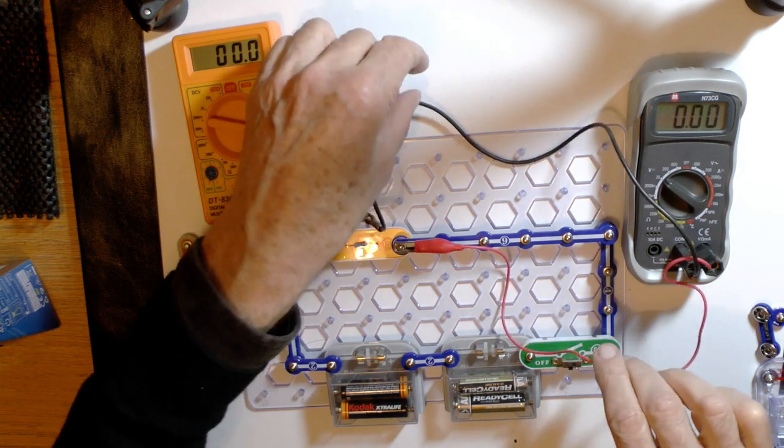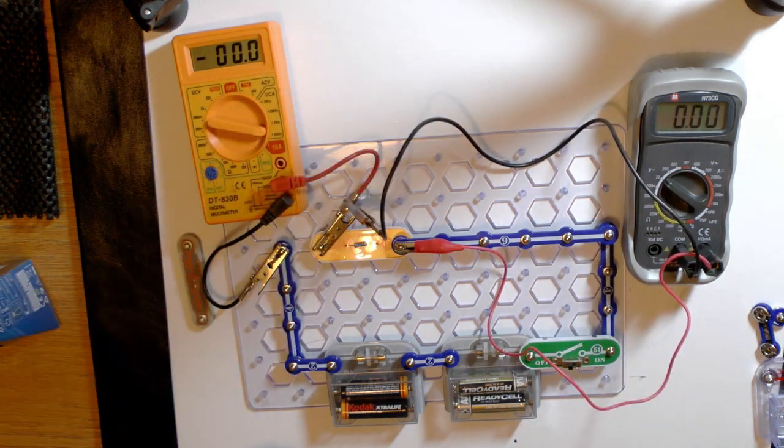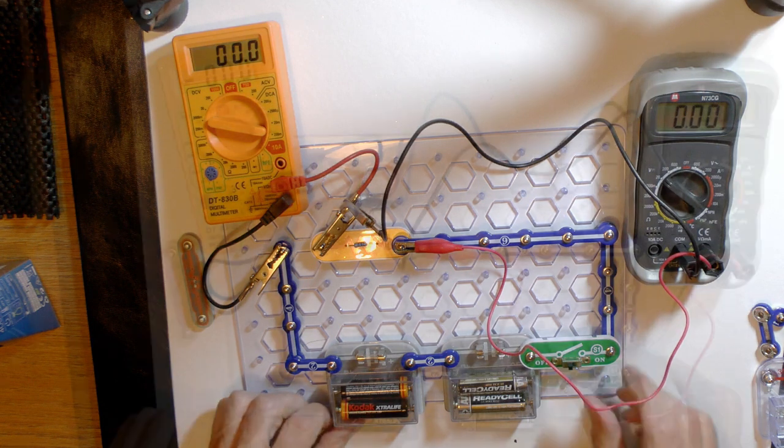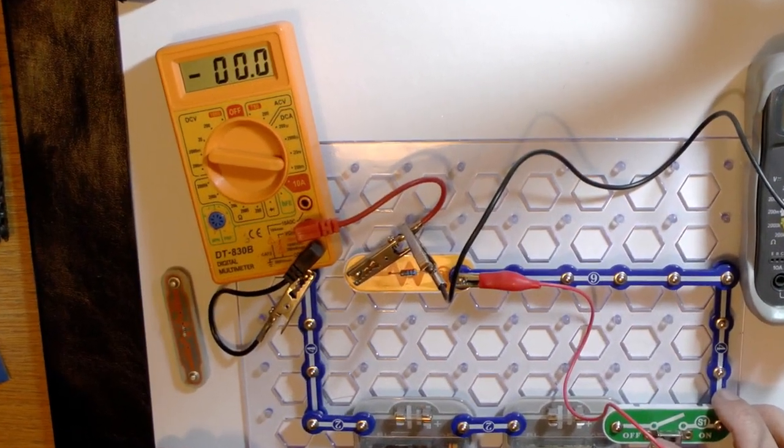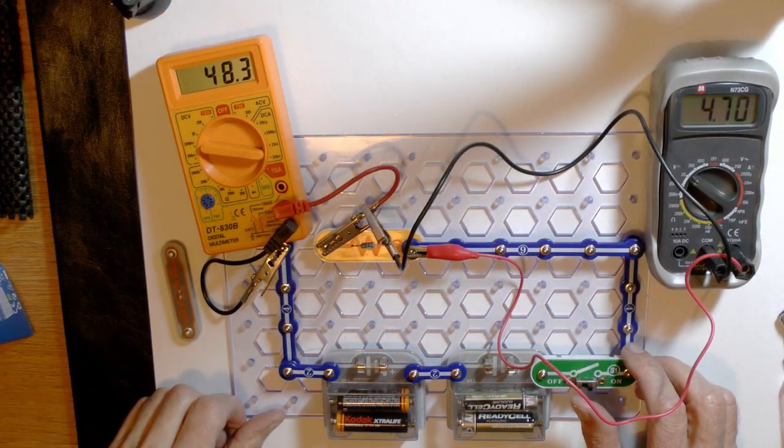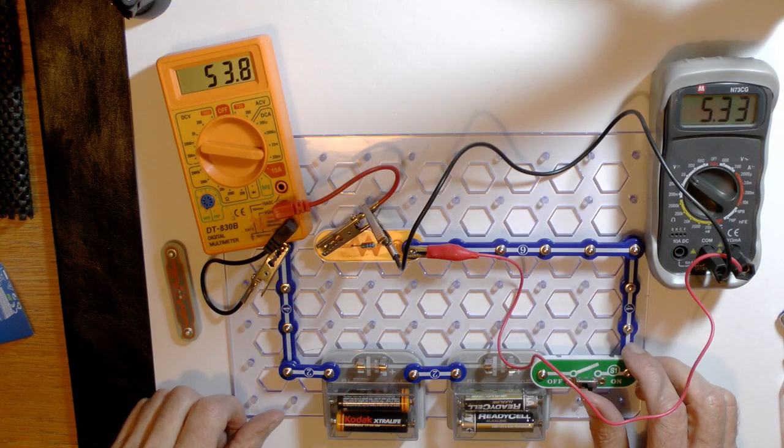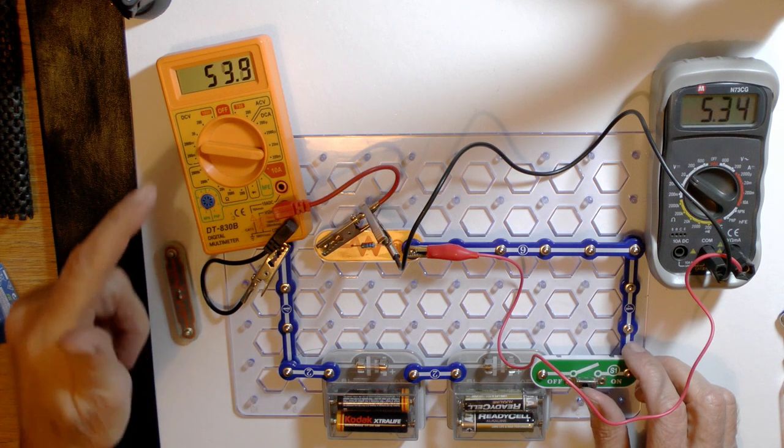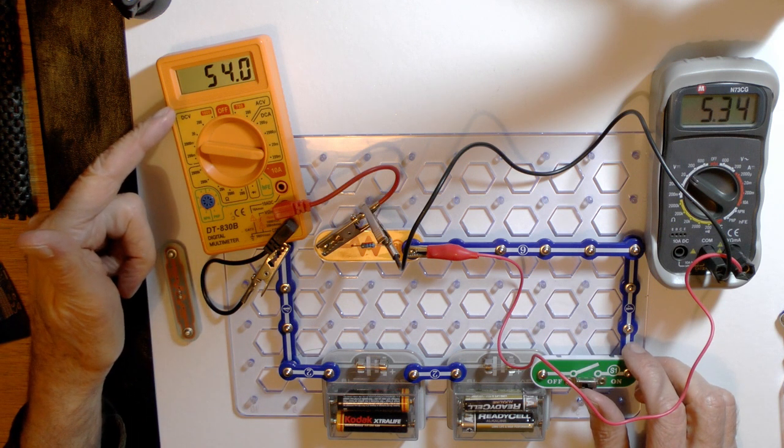From measurements of the current and the voltage we can calculate the resistance. The yellow meter is an ammeter set to read milliamps, that's thousandths of an amp. Switching along we can see that the reading on the ammeter is 54 milliamps and the reading on the voltmeter is 5.34 volts.